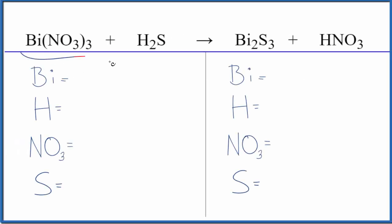Let's balance the equation for Bi(NO3)3 + H2S. We'll also look at the type of reaction. Let's start with the type of reaction.